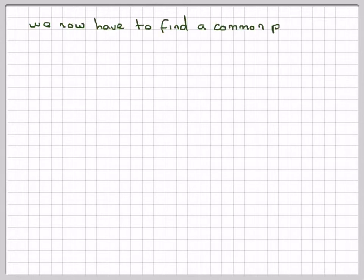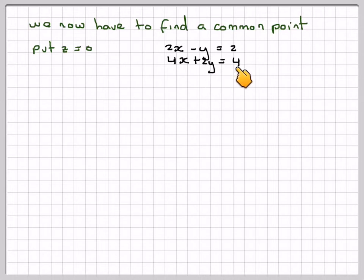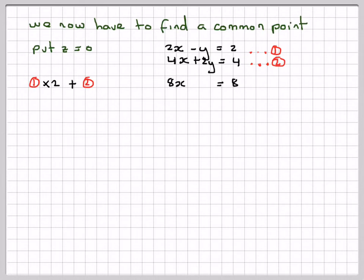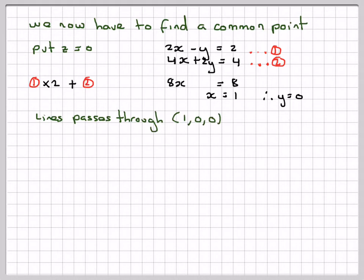We now have to find a point on the line. We only need one point, so we put z equal to 0 and solve the two equations without z. That gives 2x minus y equals 2 and 4x plus 2y equals 4. Multiplying equation 1 by 2 and adding to equation 2 gives 8x equals 8, so x equals 1. Substituting back: 2 minus y equals 2, so y equals 0. The line passes through the point (1, 0, 0).